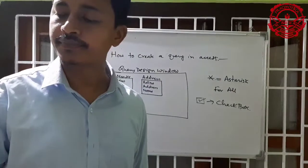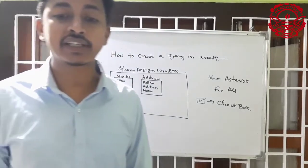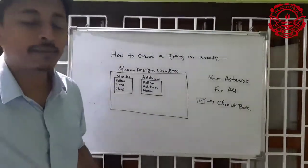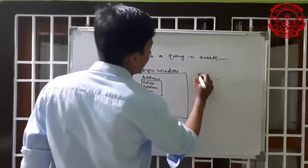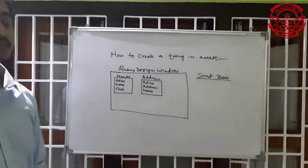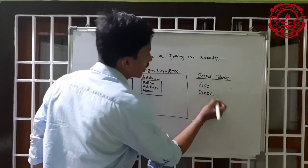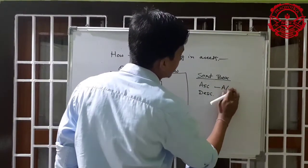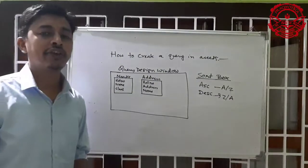Next, you can choose ascending or descending order using the sort box. The sort box is where you can arrange your field values in ascending order or descending order. If you want ascending order — say A to Z — or Z to A, you can arrange the field values in whatever order you want.